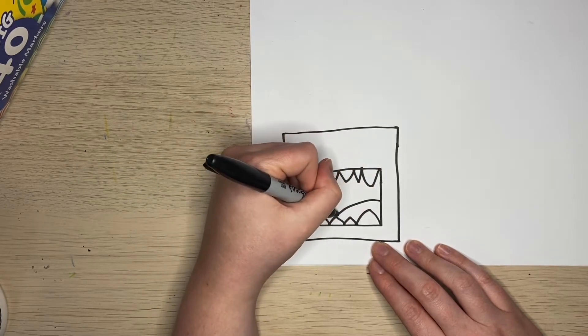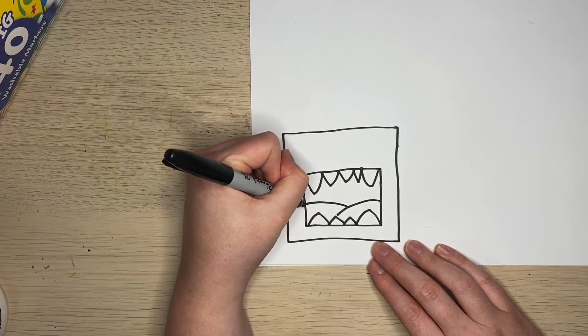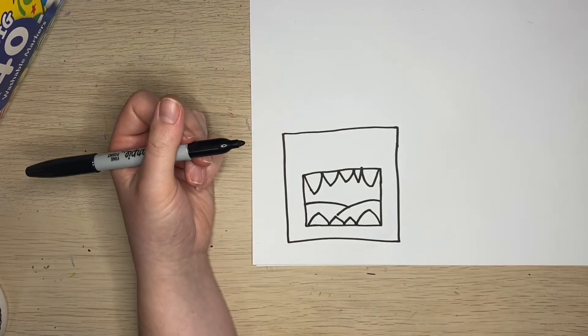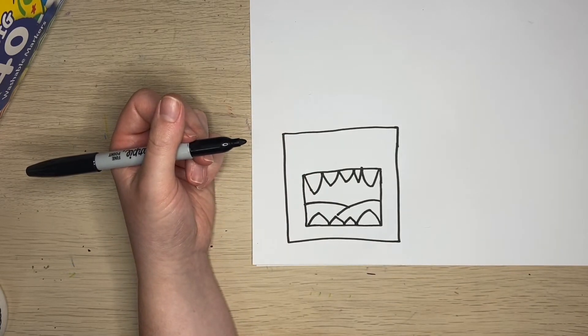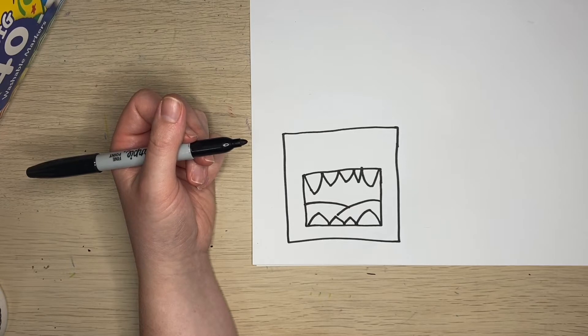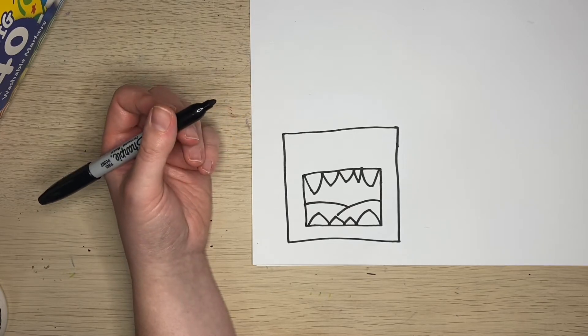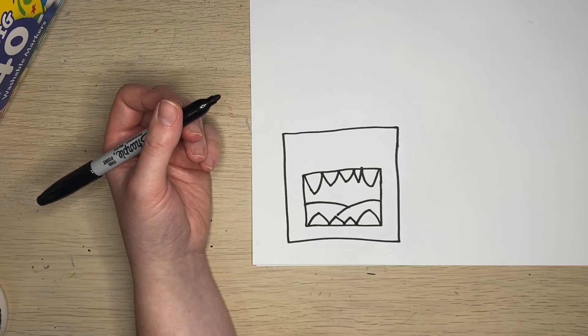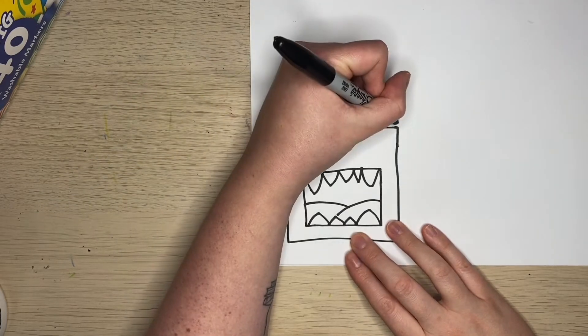And maybe a nice tongue. Then I'm going to draw his eyes. You can draw one eye, two eyes, you can have four eyeballs, it's up to you. Maybe I'm going to draw four.